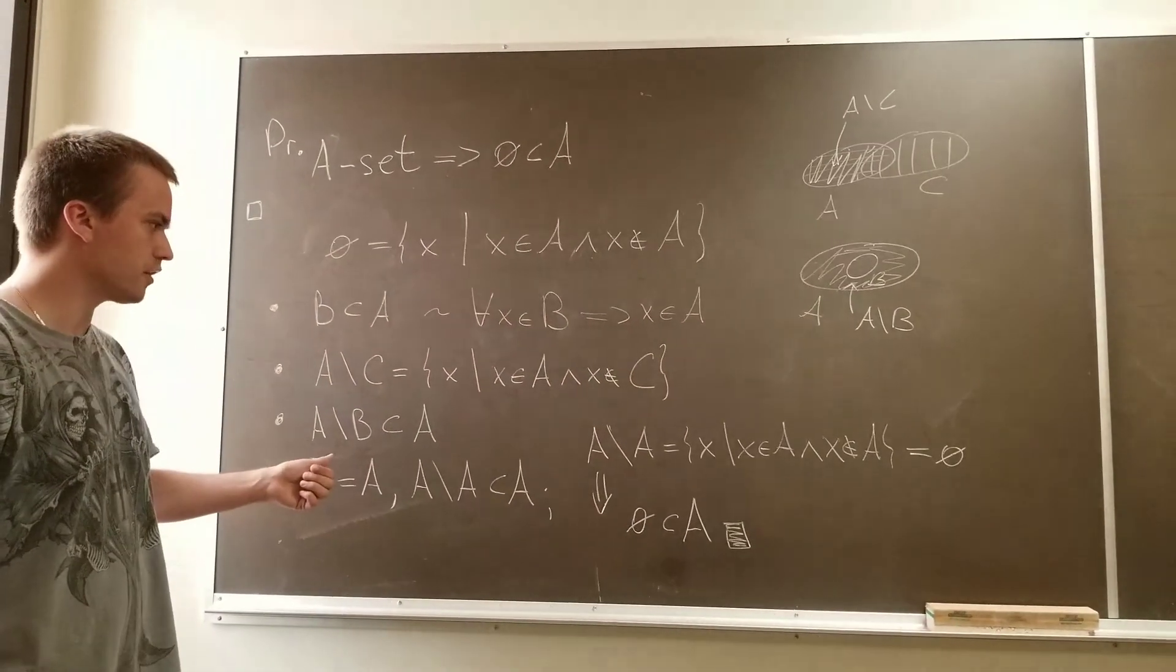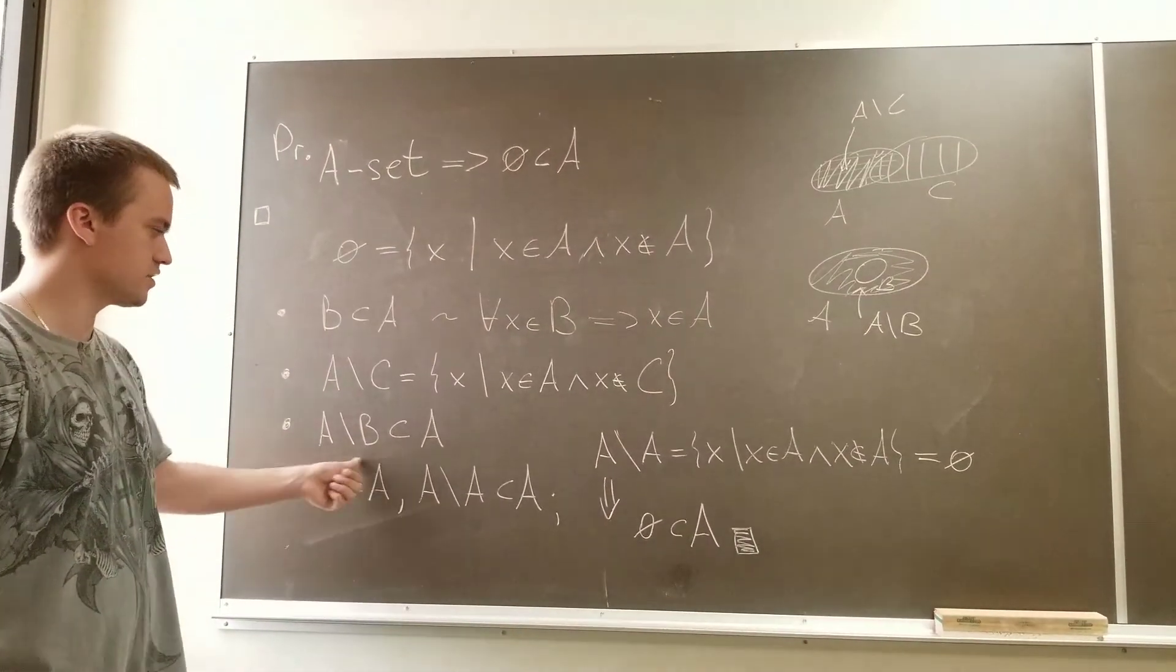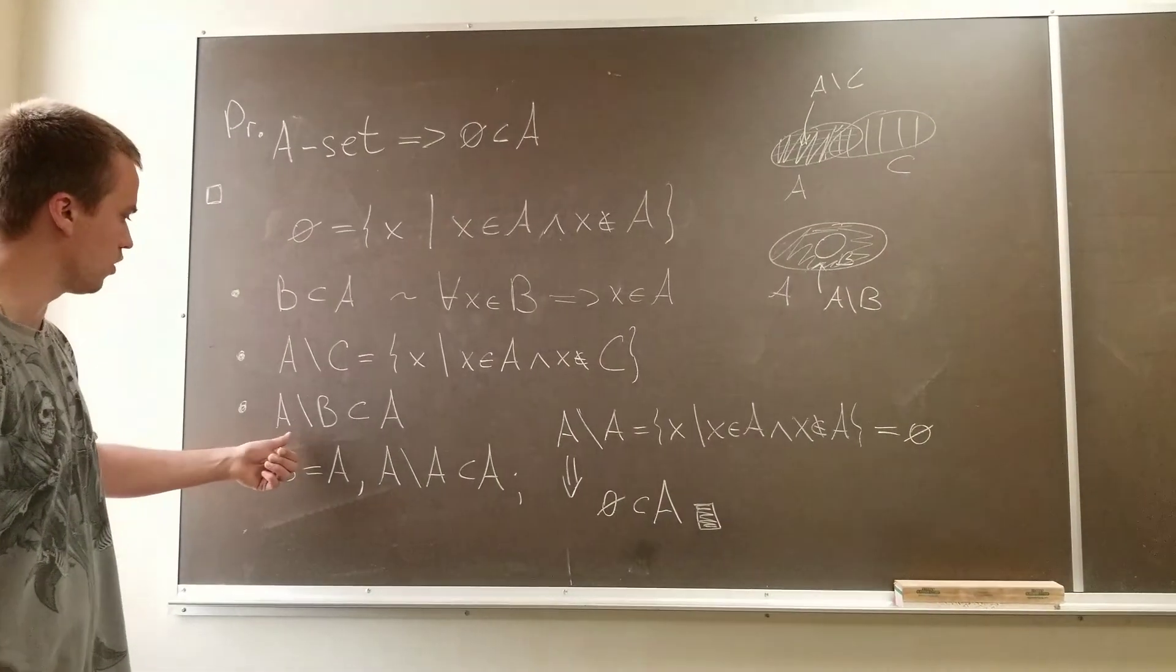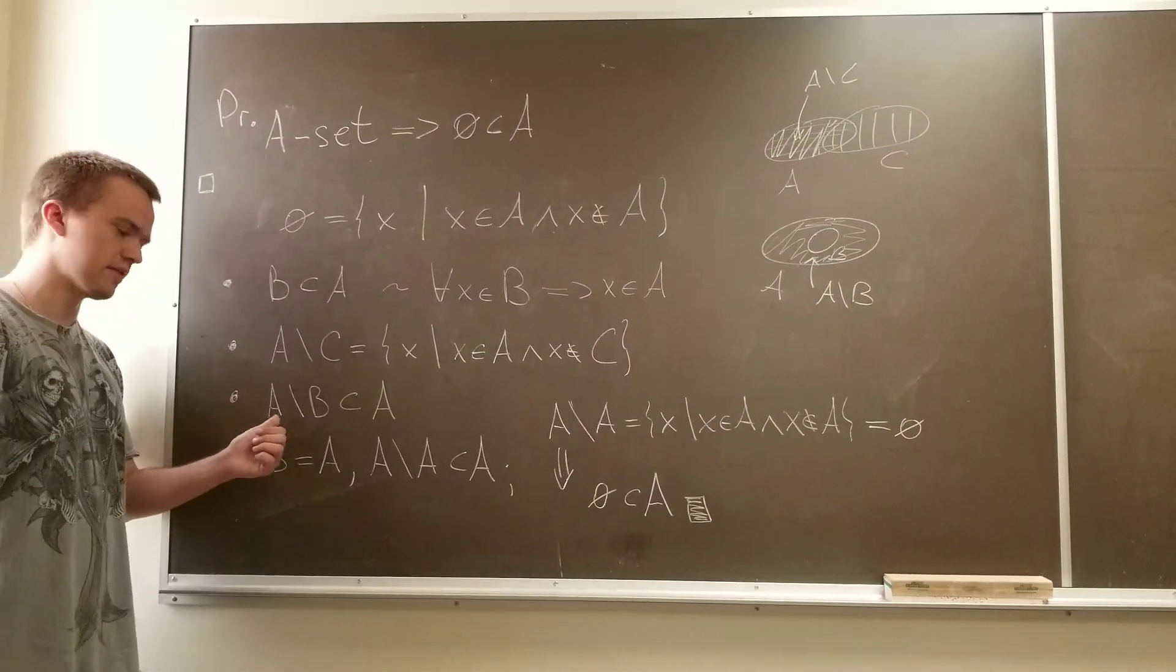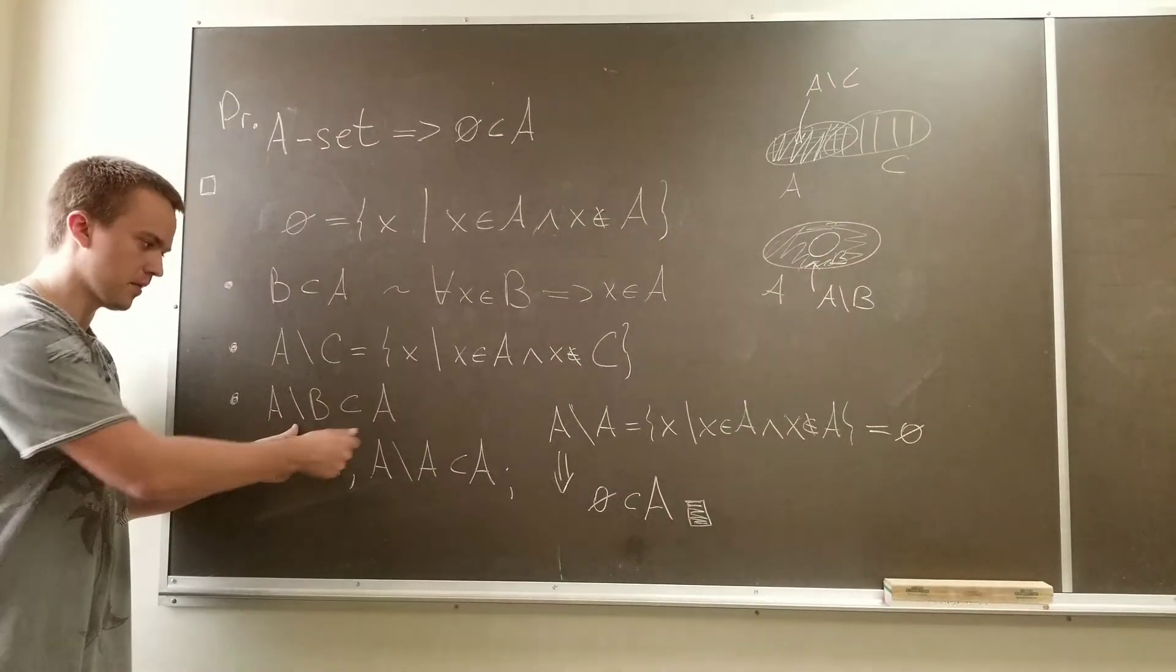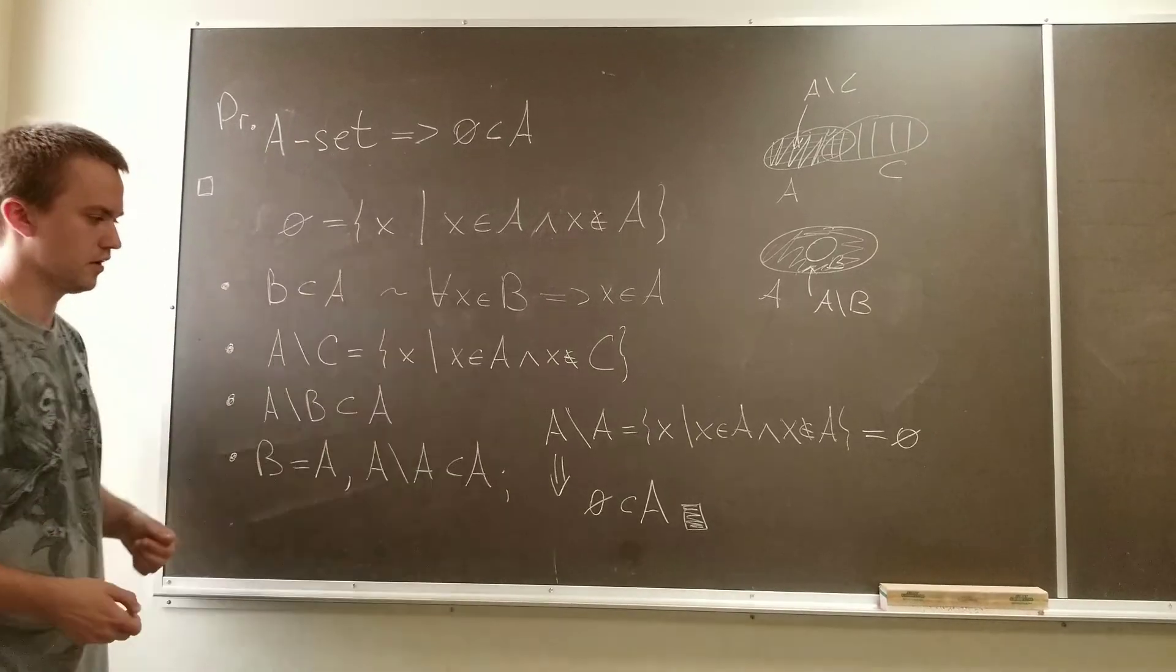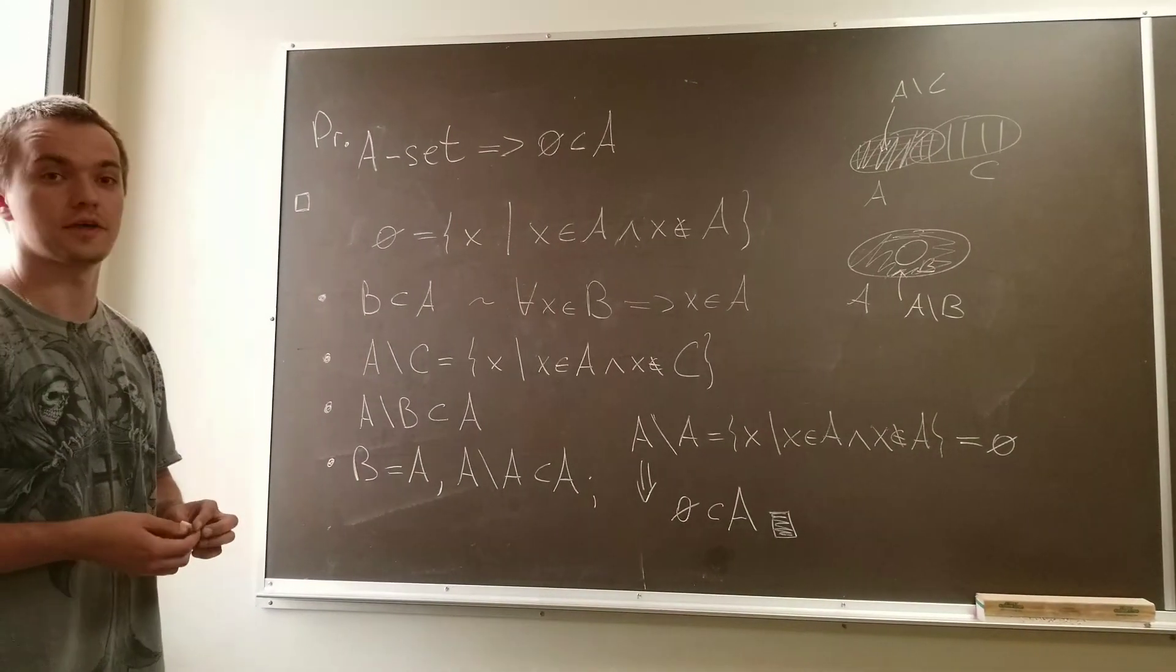The only thing to show is why this is true, but this is strictly a logic implication. Why? Because I know if X belongs to the left-hand side, then X belongs to A, but X belongs to A, so X belongs to the right-hand side. Thank you.